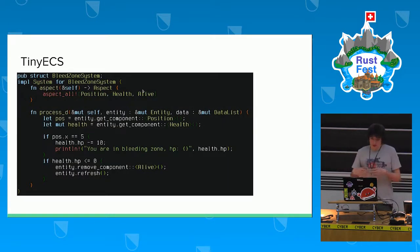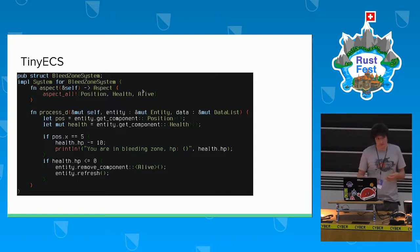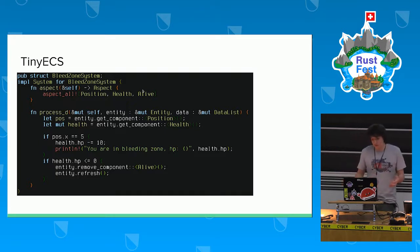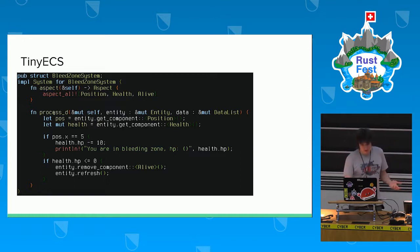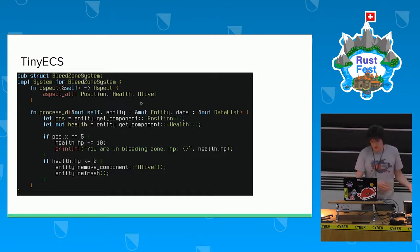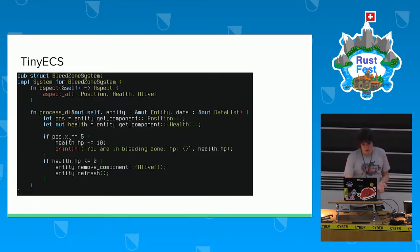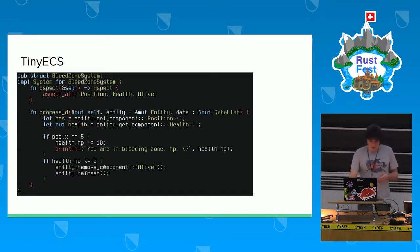A more complicated system — and also the result of macro expansion of the previous system — is the bleed zone system. It's a debuff in the game: when you're in a bleed zone, you constantly lose health points. Each frame, that system is interested in any object that has both position, health, and alive. Only alive objects can lose health. It gets position, gets health, and if the position is within some area, the entity loses health. If health drops too low, we remove the life component.